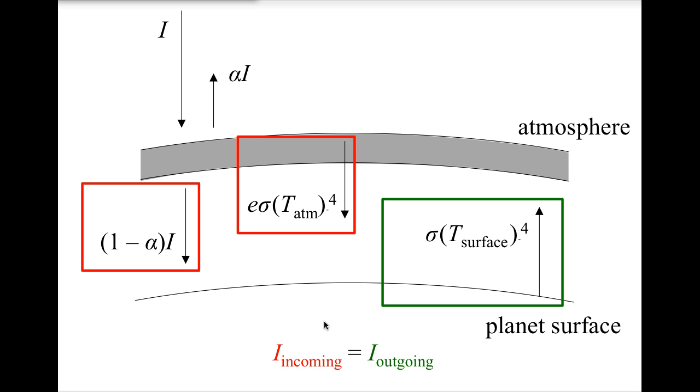This is called an energy balance climate model, because we can use it to calculate the temperature of the planet's surface.